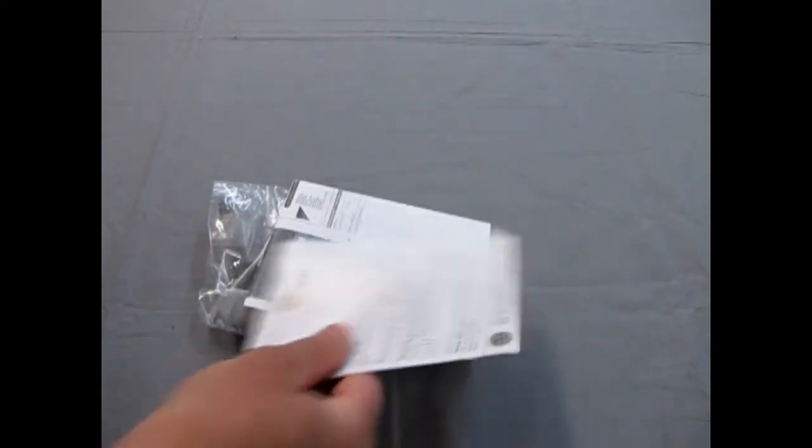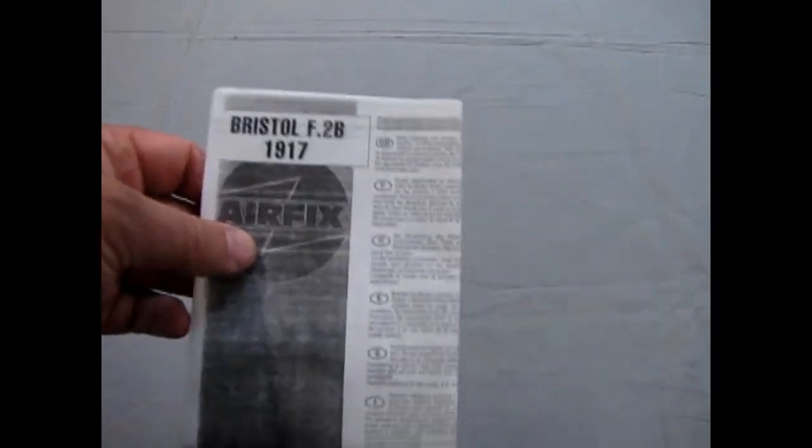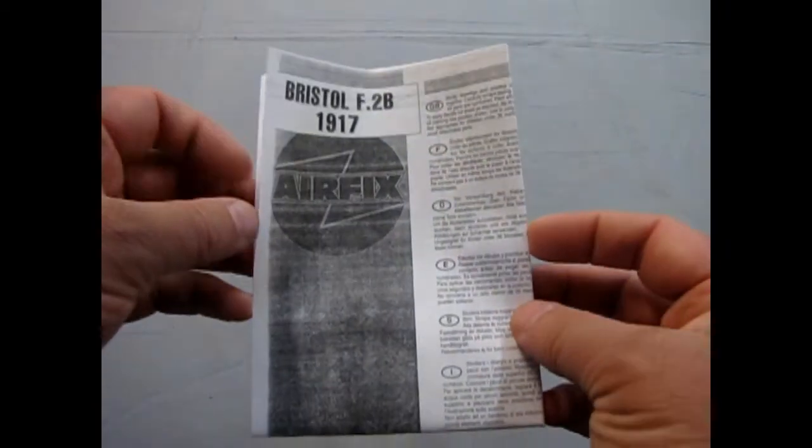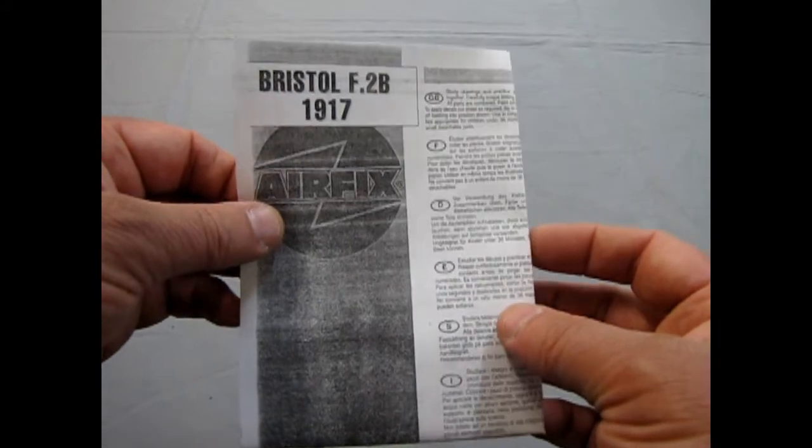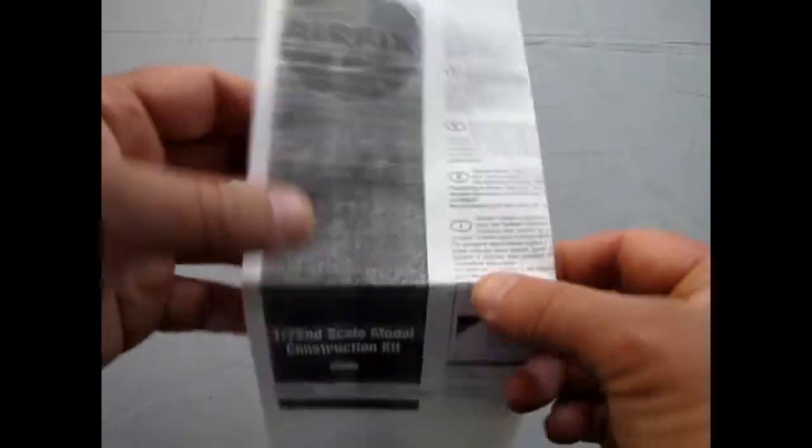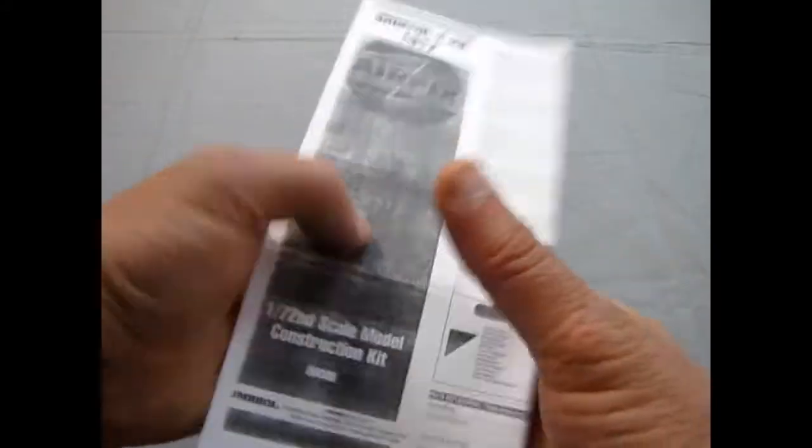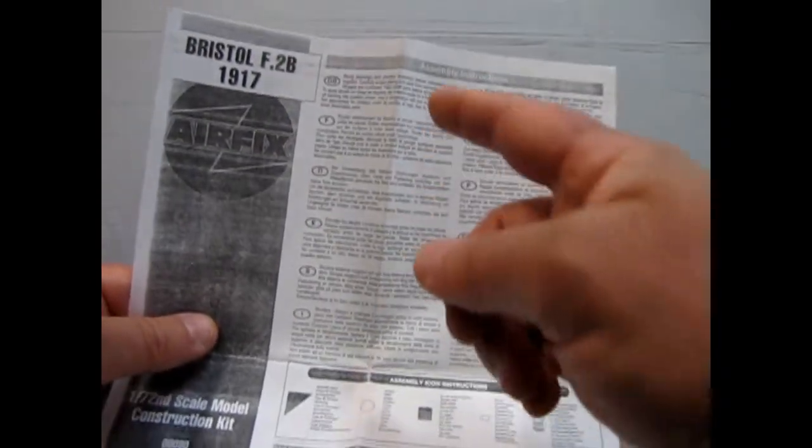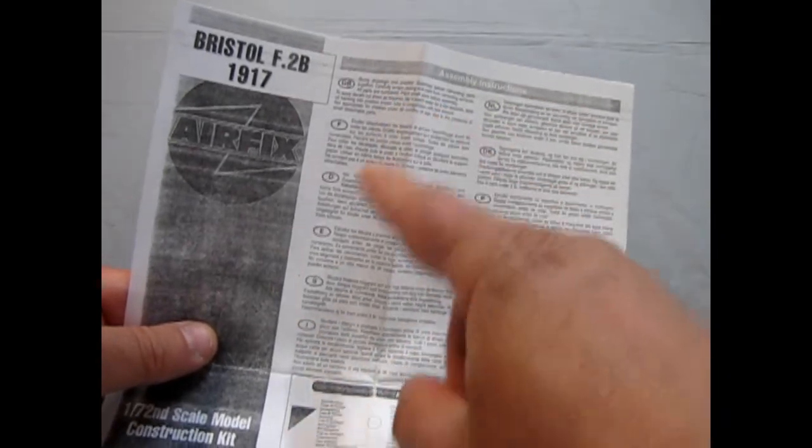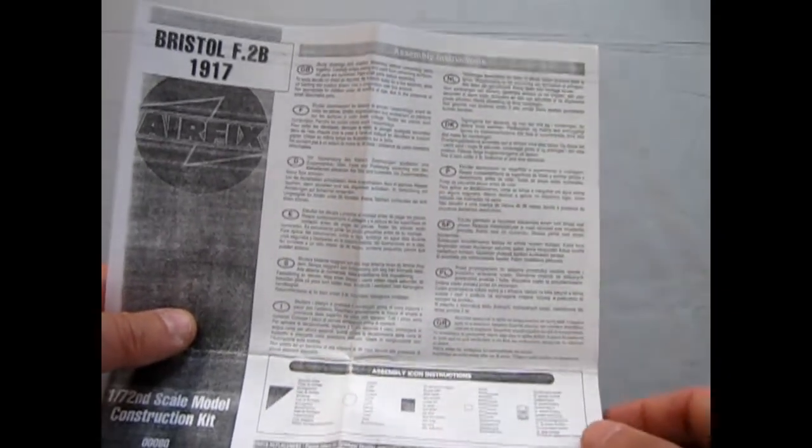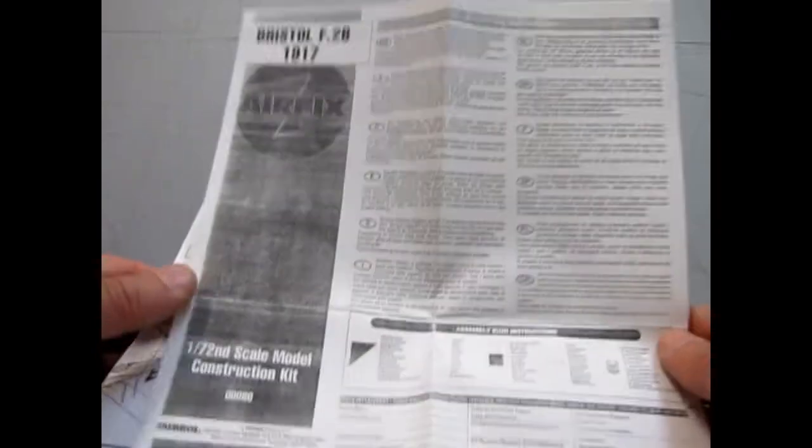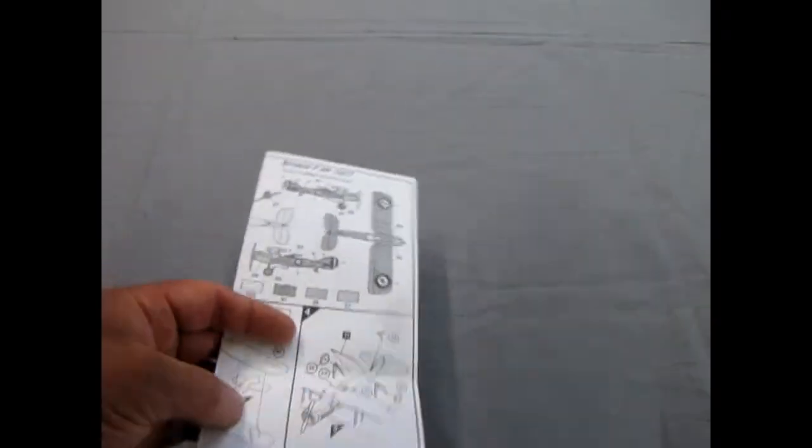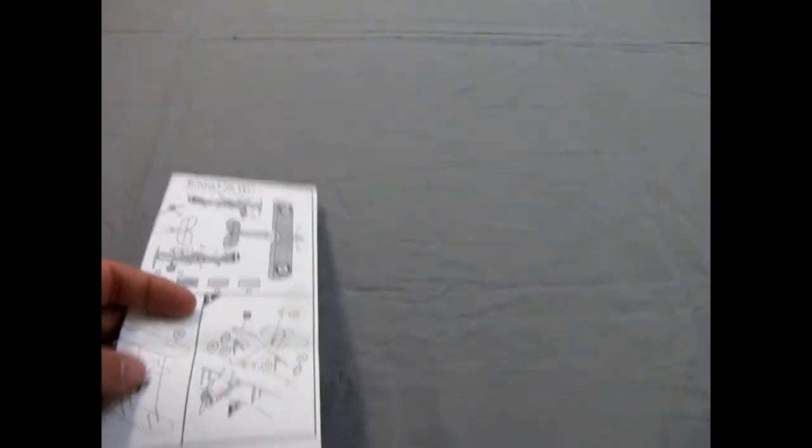We'll move some of this out of the way and the first thing we will look at are the instruction sheets, which say the Bristol F2B came out in 1917. Here once again we have instructions in all the languages of Europe.